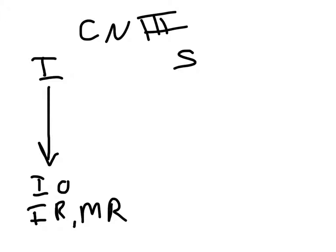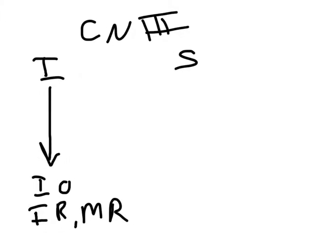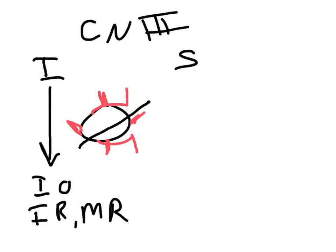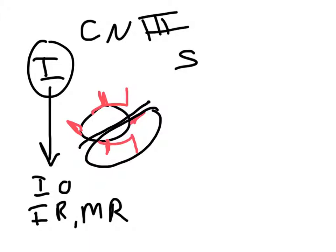If you draw an eye and attach all the muscles — superior rectus, medial rectus, inferior rectus, lateral rectus, superior oblique, and inferior oblique — the inferior branch of cranial nerve 3 innervates the bottom group. We can cross off the lateral rectus and superior oblique because they're innervated by cranial nerve 6 and cranial nerve 4, respectively.